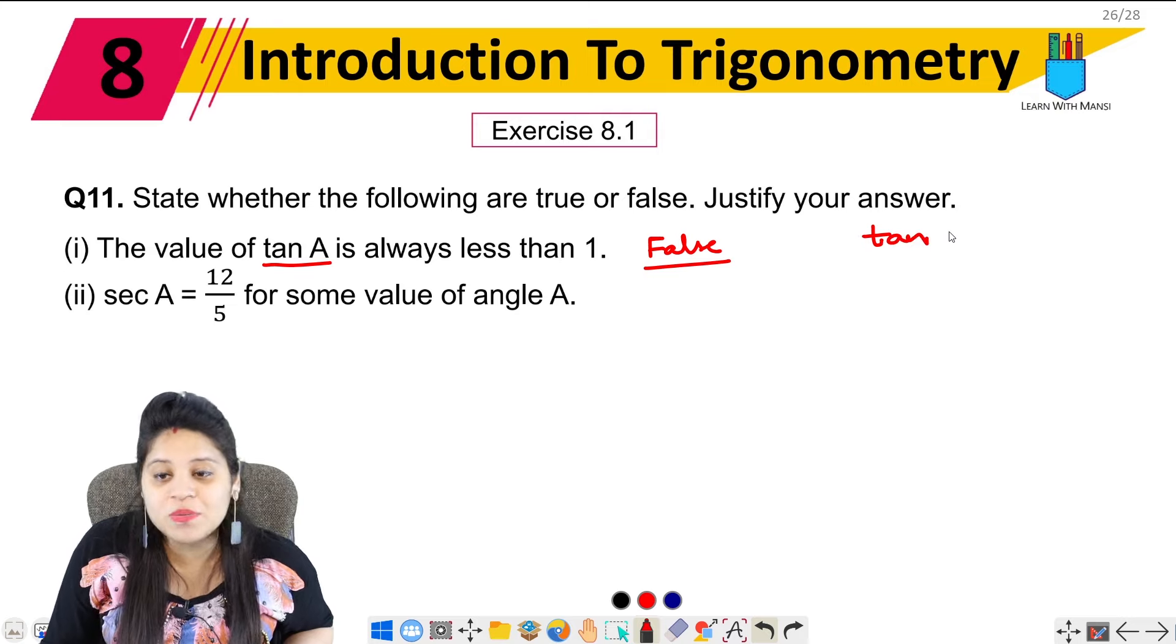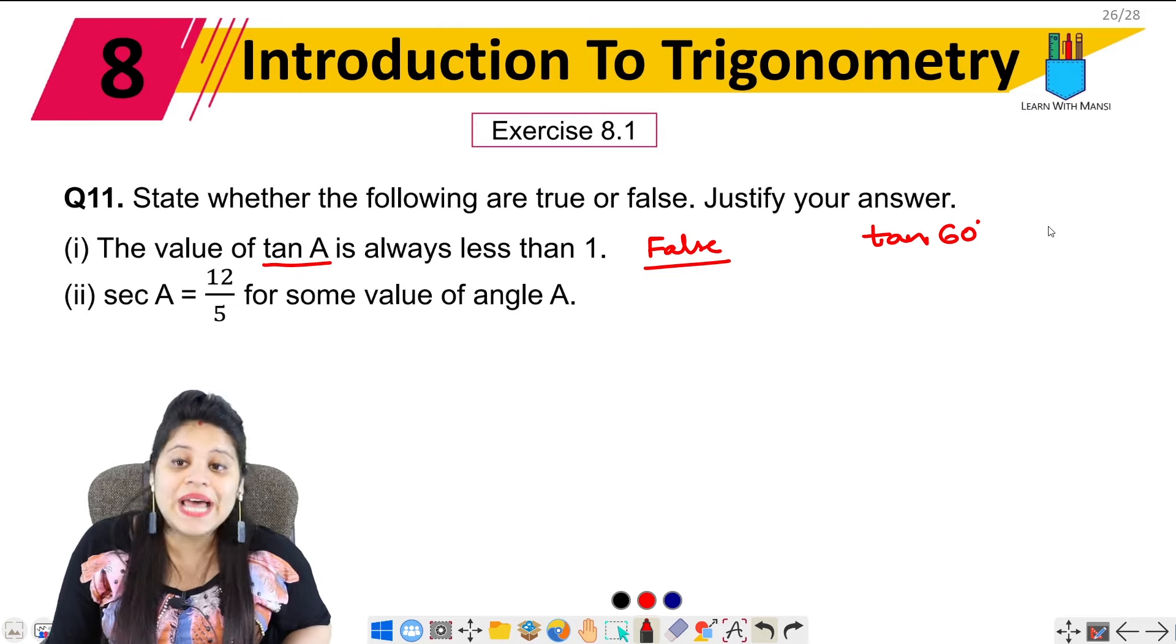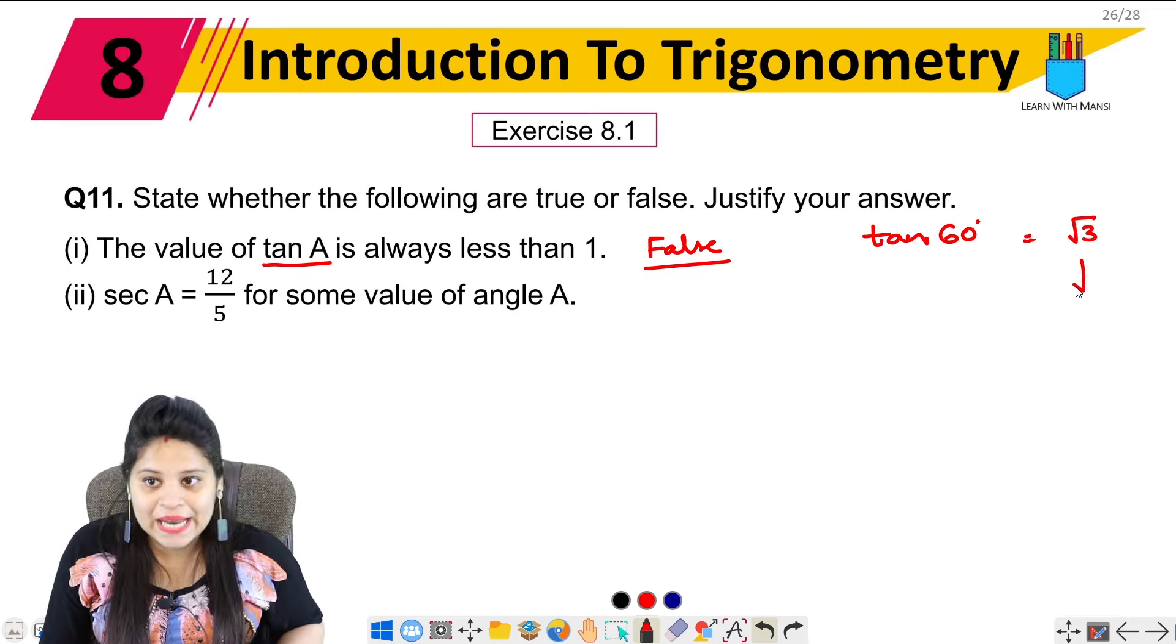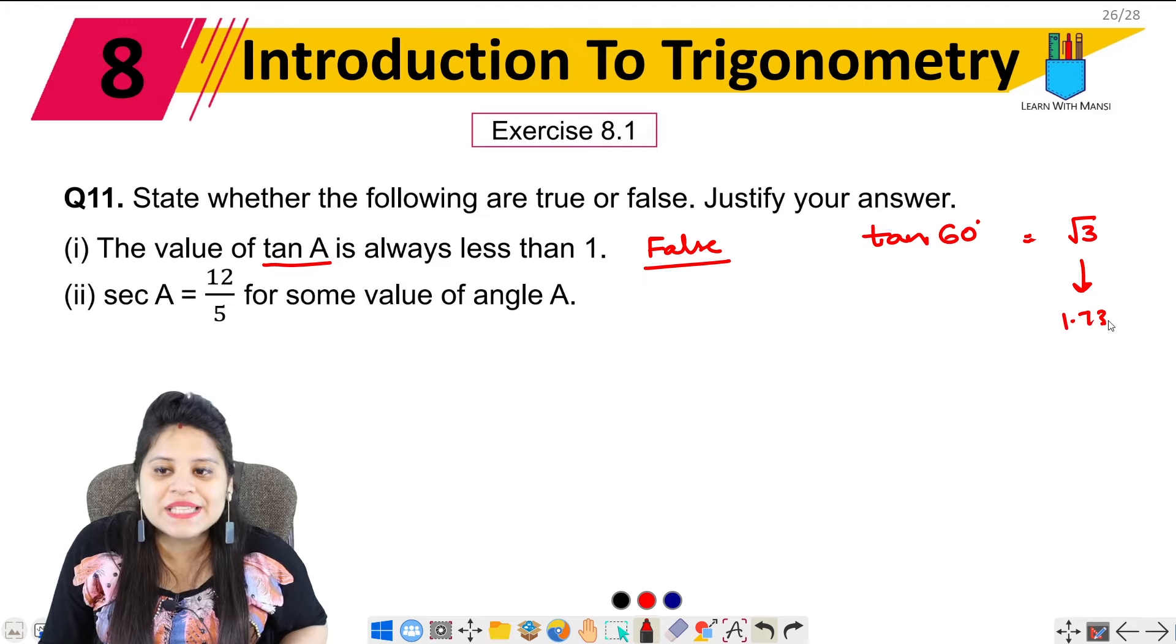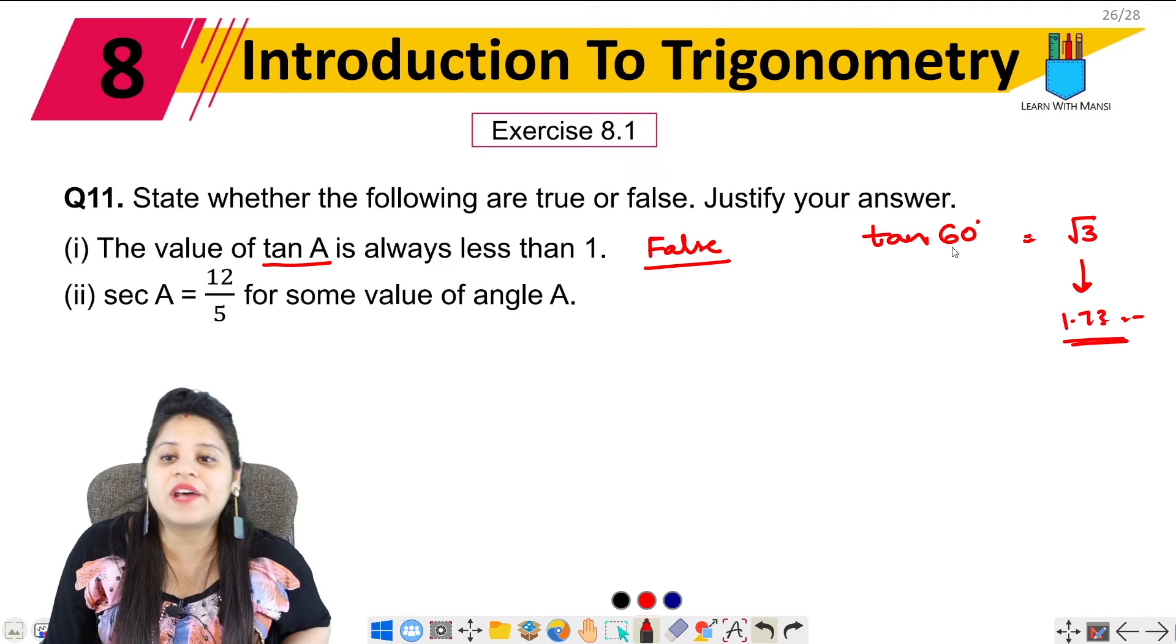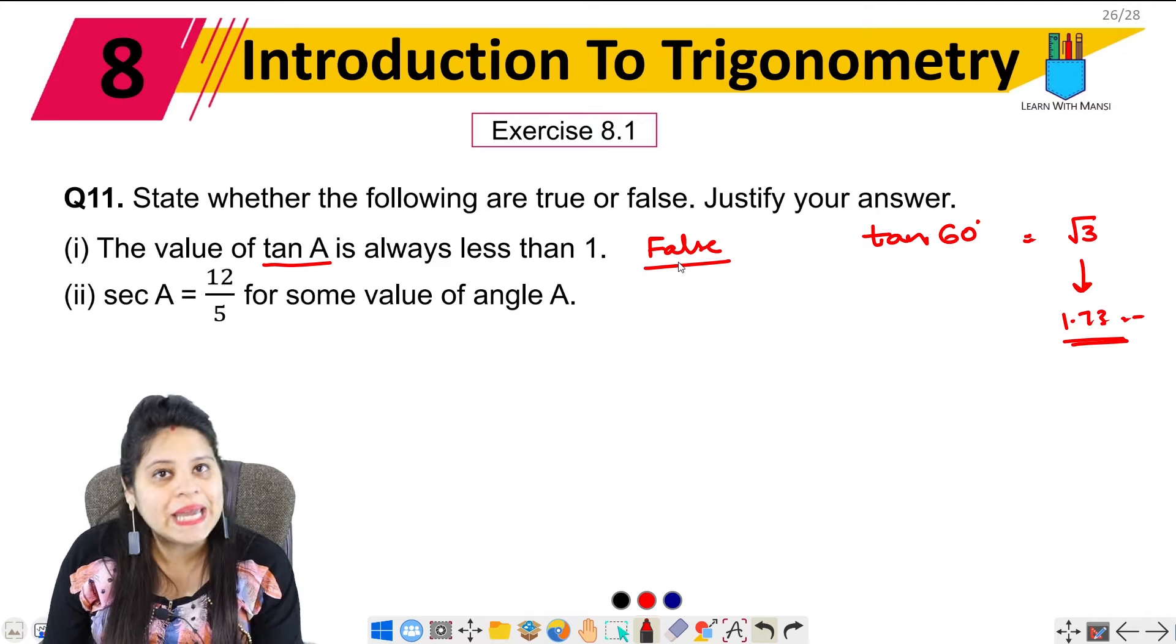Now we have a table in the introduction where we have taken tan 60 degree value. So what is tan 60 degree? It is root 3. And root 3 value is 1.73 something which is more than 1. So therefore tan 60 if it is 1 point something something then it will be bigger. That is why the statement is false.